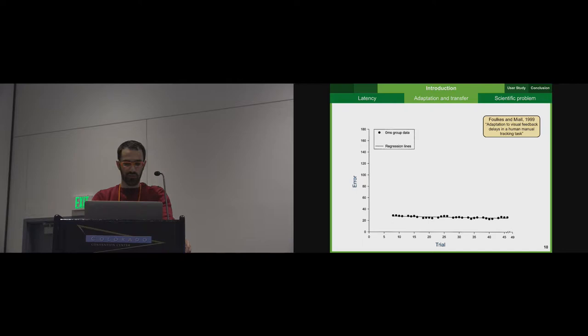They studied the tracking error evolving with the repetitions of trials over a two days experiment. At zero milliseconds of delay, there was no progress. At 200 milliseconds of delay, we can see that the difference between the two groups decreases, but very slowly. And this is also the case at 300 milliseconds. So adaptation may occur, but the process seems very long.